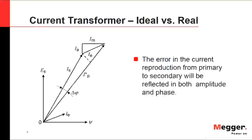Looking at the vector diagram, the error in reproducing the primary current in the secondary can clearly be seen. The electromagnetic force is 90 degrees apart from the flux. Assuming the primary current is a sinusoidal signal — and all currents, voltages, and magnetic fluxes are sinusoidal — the performance can be illustrated with the phase deviation represented as delta phi in the figure.